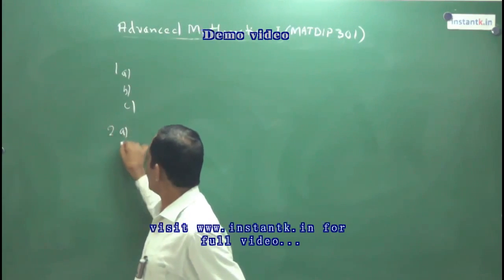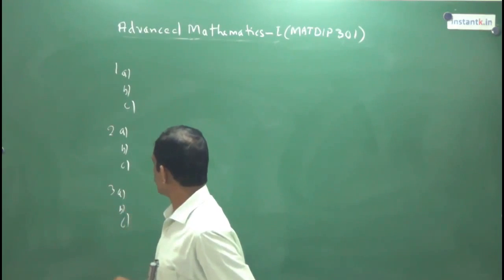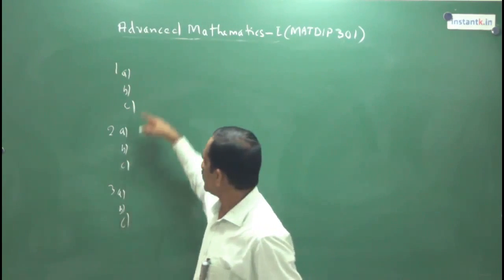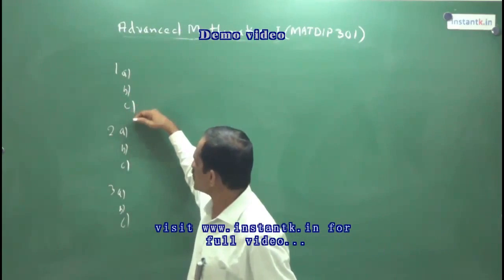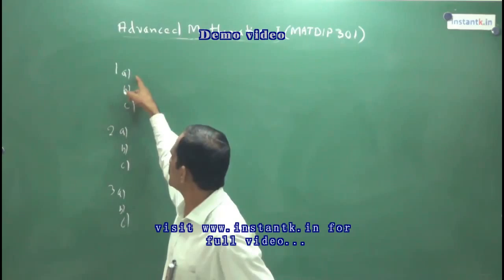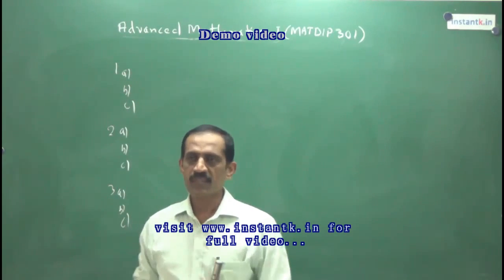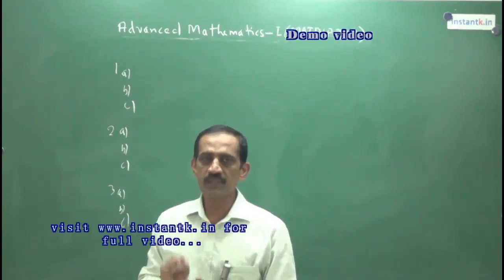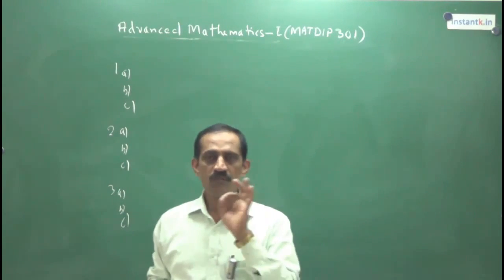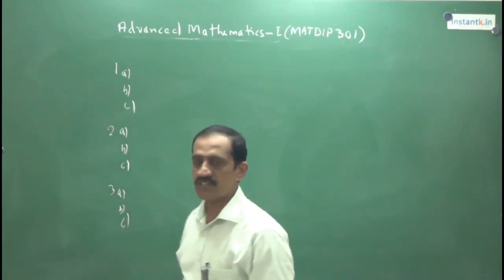Each question — first, second, third — has subdivisions A, B, C like that. Sometimes instead of 3, four questions will be asked and the entire question carries 20 marks, with marks like 6, 7, 7. We have prepared one CD in which we completed 5 questions, so 5 into 20 means 100 marks — for 100 marks, we prepared this CD.